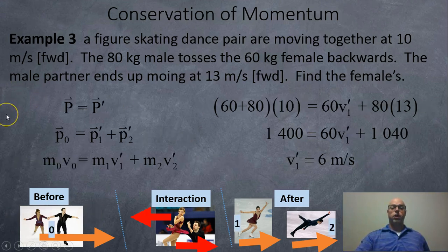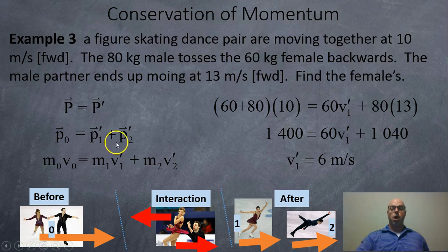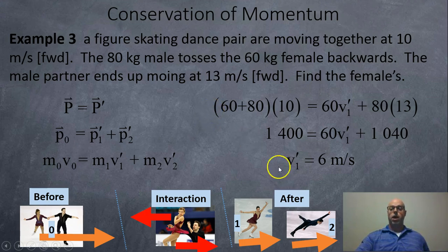Using the prime notation, we can treat the couple as a single initial object — object zero — and then they split into objects one and two. So P_0 = P1′ + P2′. Splitting the P's into their MVs and subbing in the numbers gives the same answer again.